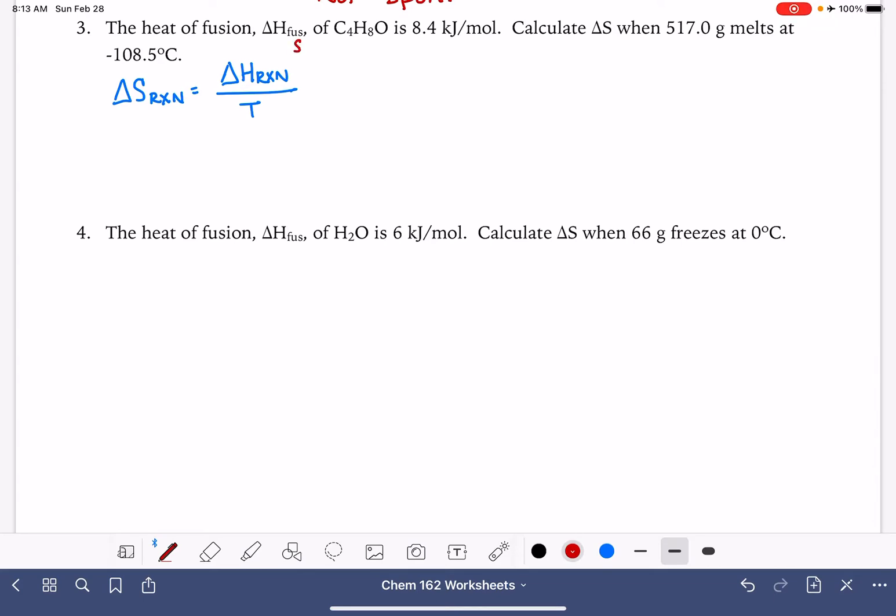Fusion is a fancy word in chemistry for a substance going from a solid to a liquid, and in this problem we're being asked to calculate the change in entropy for a melting process, which is also solid to a liquid. So that means that we are good in terms of being consistent.